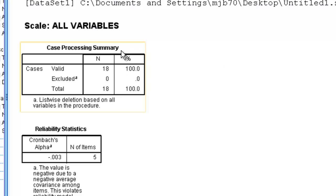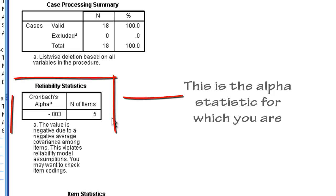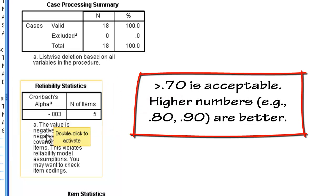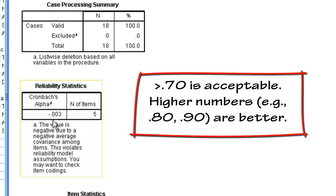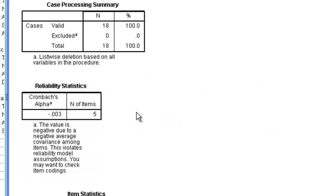We get a bunch of output windows. There were 18 cases with no missing data. We then look for the Cronbach's alpha value. Ideally, we want this number to be above 0.7. It has five items, and we want it to be above 0.7. In this case, it's actually negative, which is very bad — it means something is wrong with our scale.